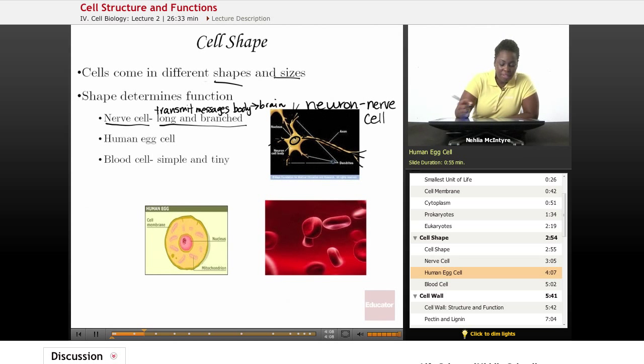And then we have the human egg cell found in the female human body, in the ovaries. And it's actually the largest cell in the human body, starts off as the largest cell in the human body, and then it continues to grow through a process we call mitosis, which is just part of cell division.